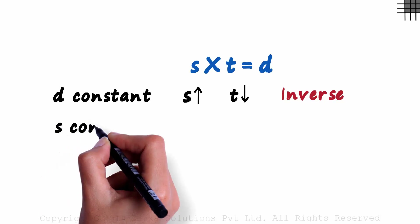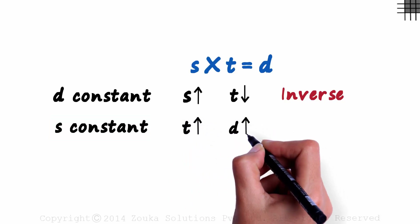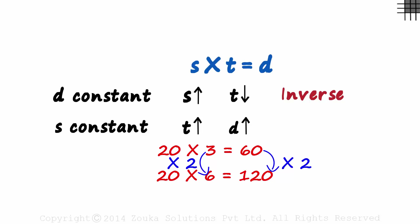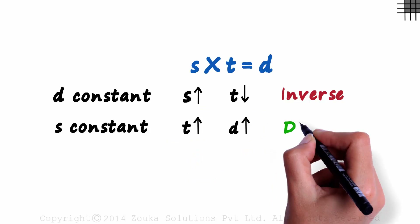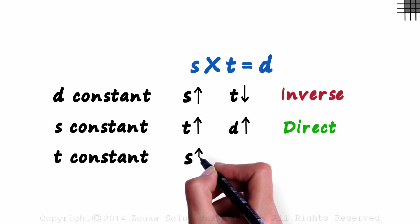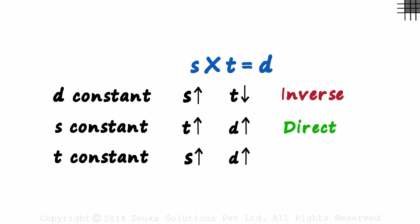What if the speed is constant? If speed is constant and time is scaled up by a factor, then the distance will also be scaled up by the same factor. 20 times 3 is 60, and 20 times 6 is 120. When T is multiplied by 2, D is also multiplied by 2. This is called direct variation. Similarly, if T is constant and the speed is increased by a factor, then the distance will also be increased by the same factor — this again is direct variation.